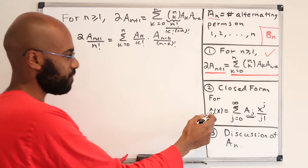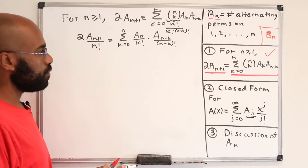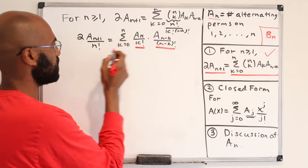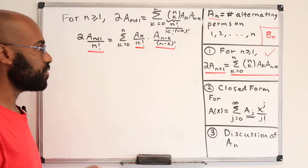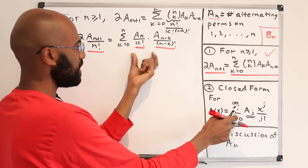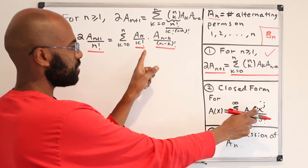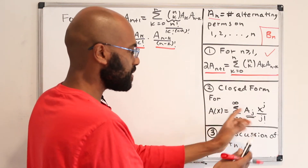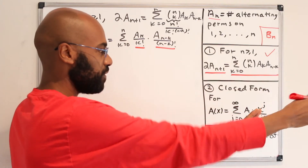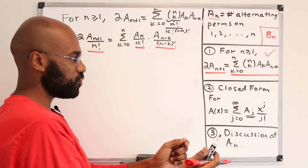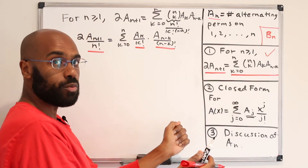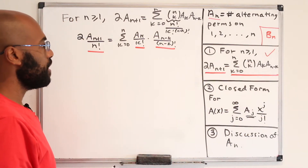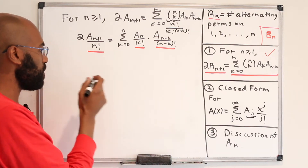We notice that the right-hand side is taking the x^k coefficient and multiplying it by the x^{n-k} coefficient and summing over all k — that's like multiplying this series by itself. When we multiply the series by itself, to get the x^n coefficient we take an x^k coefficient from one copy and an x^{n-k} coefficient from another copy and do that for all possible k. So that suggests we should square the series A(x).